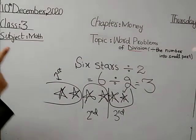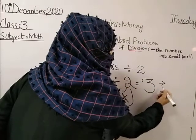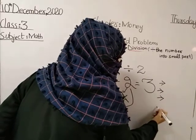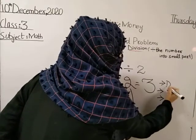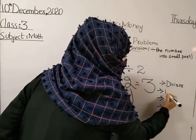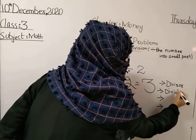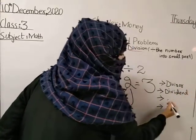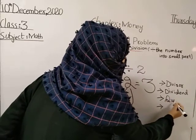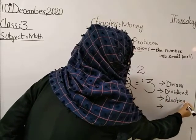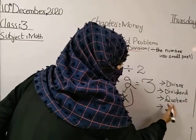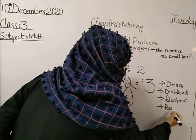First word is divisor. Second number is dividend, D-I-V-I-D-E-N-D. Third word is quotient, Q-U-O-T-I-E-N-T. And fourth word is remainder.